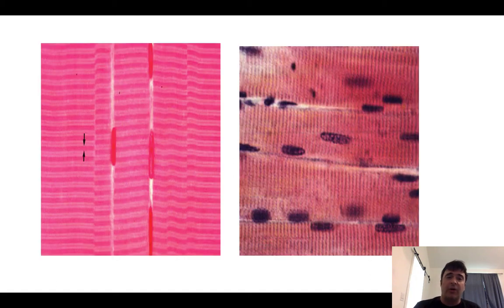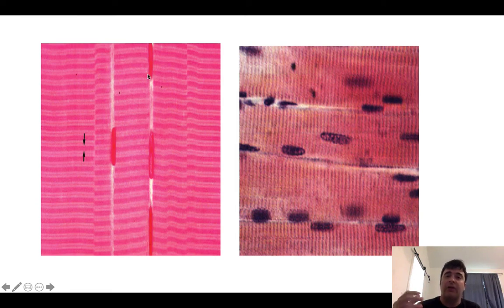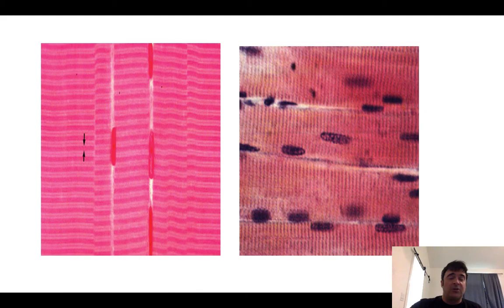Looking at skeletal muscle tissue histologically — these are longitudinal sections. What you're looking at here are muscle fibers, and the nuclei of these muscle fibers tend to get pushed toward the periphery. Each muscle fiber has multiple nuclei — that's what we mean by multi-nucleated. You can see those nuclei pushed toward the periphery. The second anatomical characteristic is the stripe pattern — that's striated. If you give me striated and multi-nucleated on an exam, I know you're talking about skeletal muscle tissue.